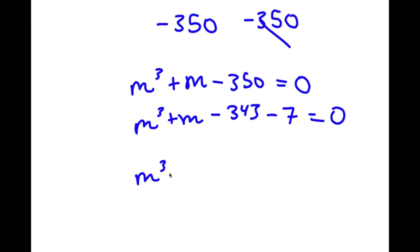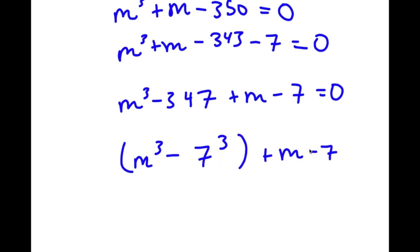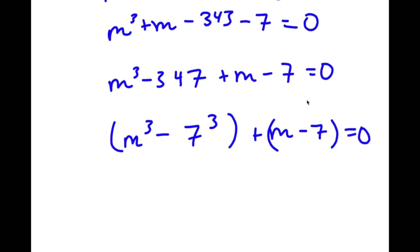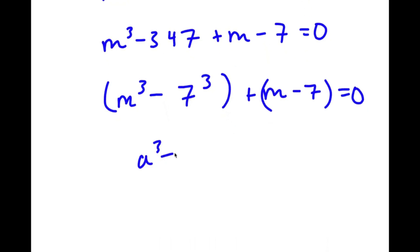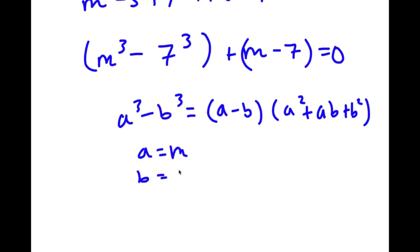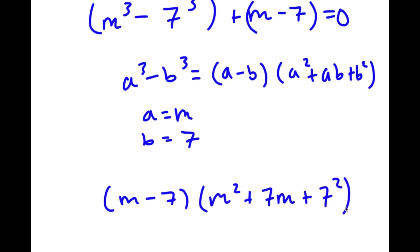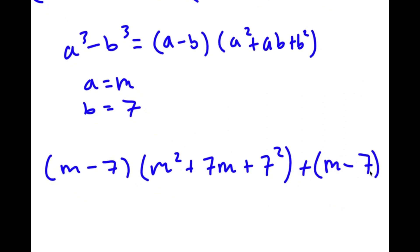So now I have m cubed minus 343 plus m minus 7 equals 0. Now m cubed minus 343 is the same as m cubed minus 7 cubed. Using the difference of cubes formula — a cubed minus b cubed equals (a minus b)(a squared plus ab plus b squared) — with a = m and b = 7, I get (m minus 7)(m squared plus 7m plus 49) plus (m minus 7) equals 0.